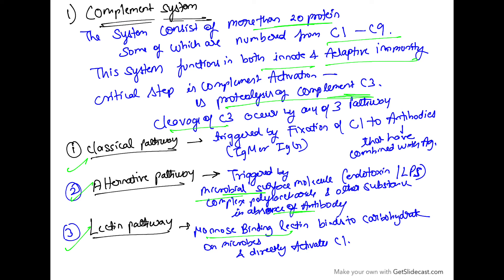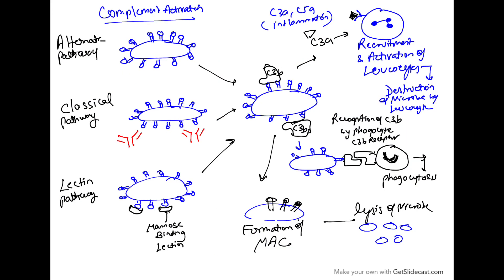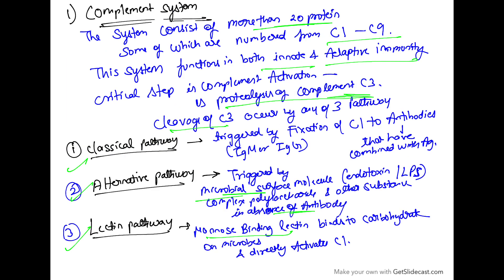These three pathways can be shown in a diagram: the alternate pathway involves direct activation by microbes, the classical pathway involves antibodies that bind to microbes, and the lectin pathway involves mannose-binding lectins on microbes. The main step in complement activation is the proteolysis of C3, which can be accomplished by any of these three pathways.